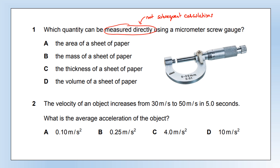A micrometer measures length. So we're not going to be able to measure area, because we would have to measure two lengths and do a calculation. We're not going to measure mass because it measures length — that doesn't make sense. The thickness of a sheet of paper? Yes, that would work. We use it for measuring things like thicknesses of wires and paper. Volume of a sheet of paper would require three measurements multiplied together, so that's not a direct measurement.